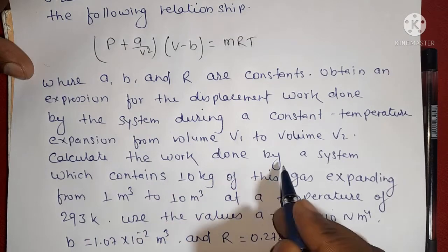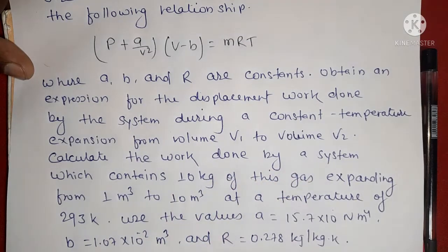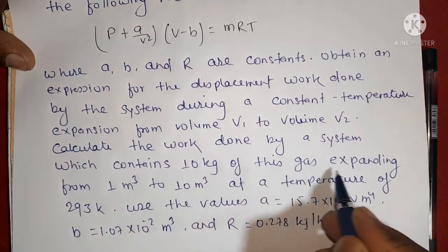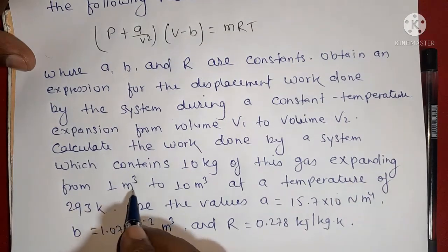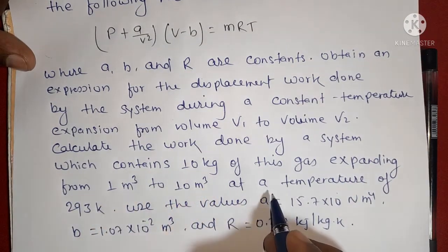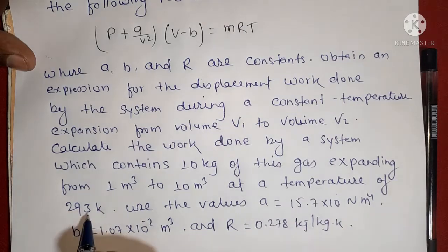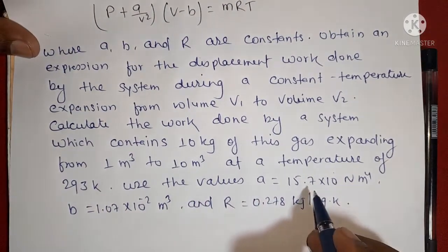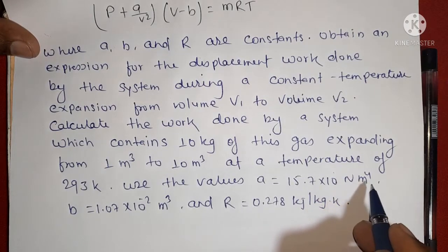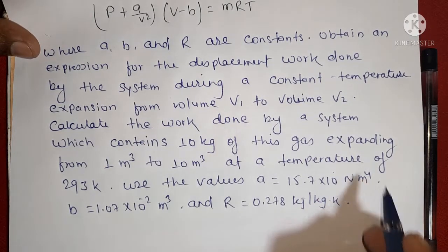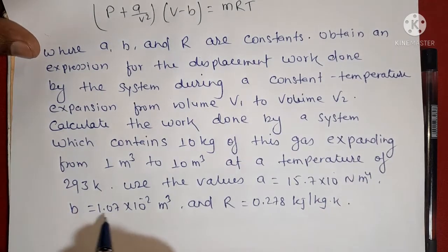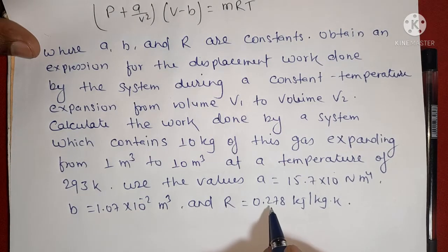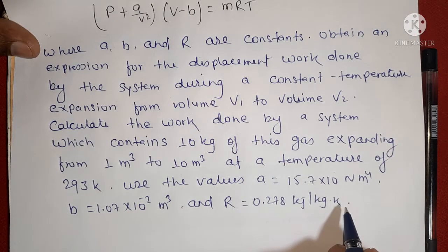Calculate the work done when the system contains 10 kg of this gas expanding from 1 cubic meter to 10 cubic meters at a temperature of 293 Kelvin. Use the values: A = 15.7 × 10 Newton·meter⁴, B = 1.07 × 10⁻² cubic meters, and R = 0.278 kilojoule per kg·Kelvin.